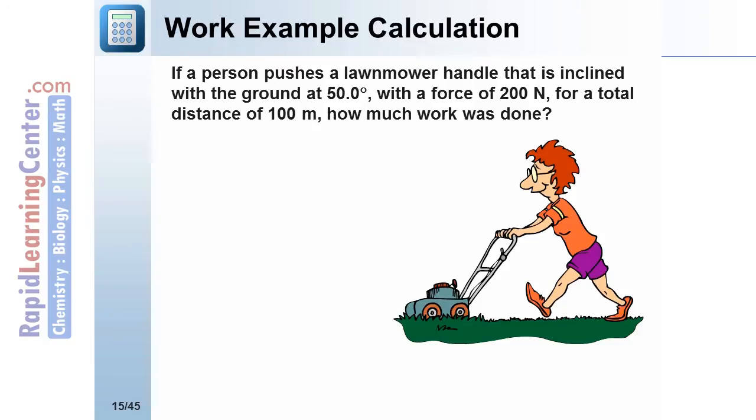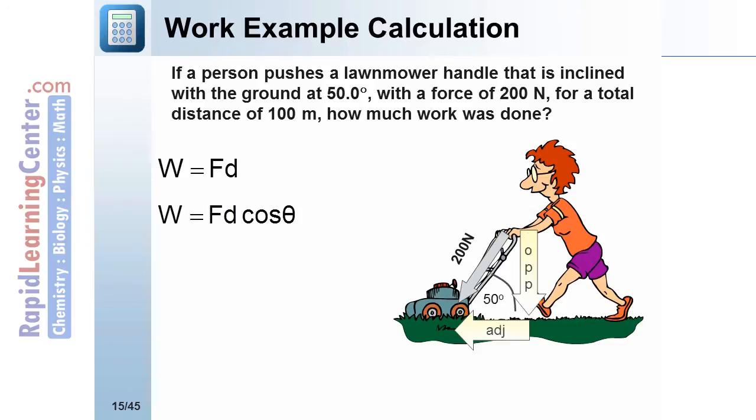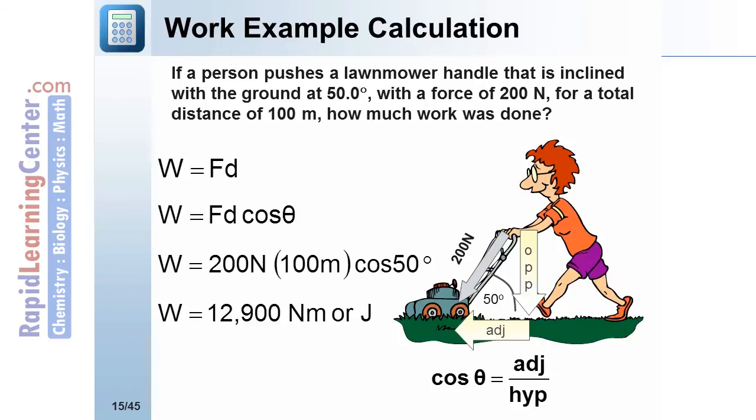Work Example Calculation. If a person pushes a lawn mower handle that is inclined with the ground at 50 degrees, with a force of 200 newtons, for a total distance of 100 meters, how much work was done? First, diagram our problem. The 200 newtons is along the handle, the 50 degrees as shown. We might use our work formula, Fd cosine theta, and you might also notice a right triangle is formed with our applied force and its components. When substituting values and calculating, we get a work of 12,900 newton meters, or joules.